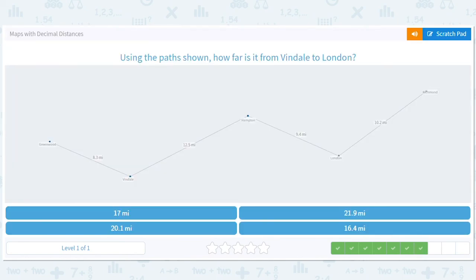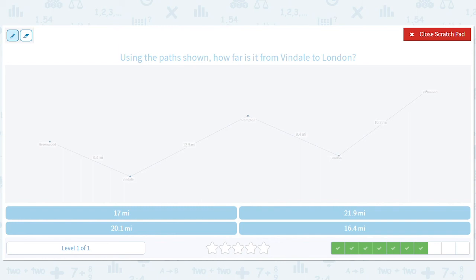How far is it from Vindale to London? We've got here to here. We just add these two numbers up. 12.5, 9.4. That's a 9, that's a 1, another 1 here. So 21.9.